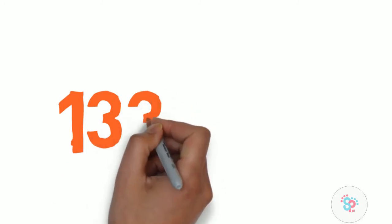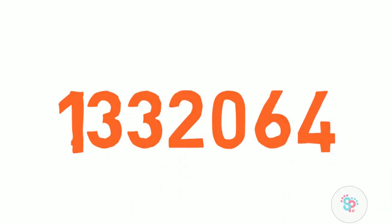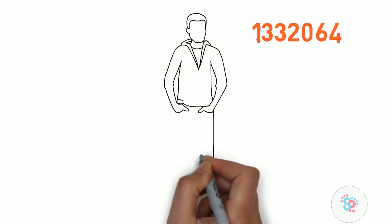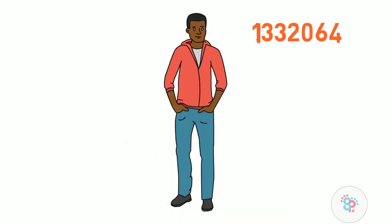Now imagine that 1332064 is not a register number but the bank balance of Mr. Ram. If someone asks Ram what's your bank balance, he would say it is one million three hundred thirty-two thousand and sixty-four, because it is a count of money and has mathematical sense. All numbers with mathematical meaning come under quantitative data, and numbers without mathematical meaning — like phone numbers, register numbers, pin codes — come under qualitative data.